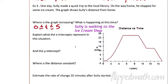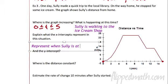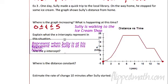Explain what the x-intercepts mean. In this situation, we're going to ask you about using context — that means this problem right here. The x-intercepts are at zero and 15. It doesn't ask what they are, it says explain what they represent. Here they represent where the distance is zero — the distance from home. These represent when Sully is at his house, because the distance is zero.